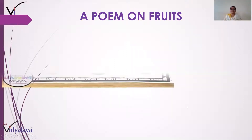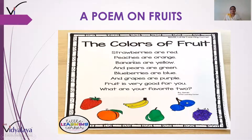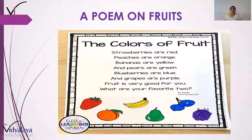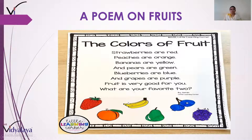Toh ab hum ek poem dekhenge — bahut pyaari si poem hai fruits pe, 'The Colors of Fruit'. Fruit ke alag-alag colors pe hai: Strawberries are red. Peaches are orange. Bananas are yellow. And pears are green. Blueberries are blue. And grapes are purple. Fruit is very good for you — what are your favorites too? Is tarah se alag-alag colors ke alag-alag fruits hote hain. Aur end mein puchha hai ki aapke kaunse do favorite fruits hain.